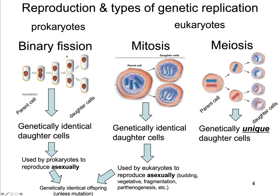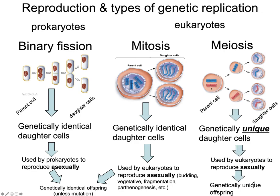Binary fission is the process used by prokaryotes to reproduce asexually, while mitosis is the process eukaryotes use to reproduce asexually. We had different words for asexual reproduction in eukaryotes — budding, vegetative reproduction, fragmentation, or parthenogenesis. All of these require mitosis and produce genetically identical offspring, unless a mutation occurred. This is in contrast to meiosis, which is used by eukaryotes to reproduce sexually and produces genetically unique offspring.